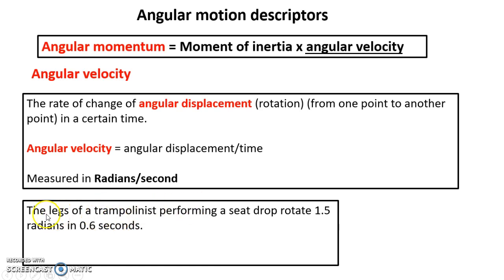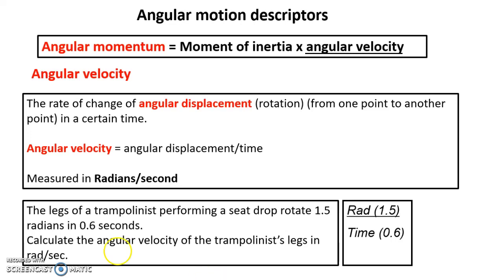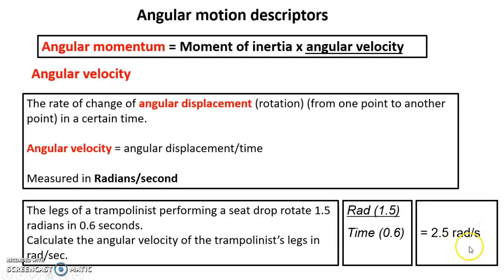So this would be the kind of thing you'd get. You'd be given the radians. For example: the legs of a trampolinist performing a seat drop rotate 1.5 radians in 0.6 seconds. Your simple task would be to calculate the angular velocity of the trampolinist's legs in radians per second. Have a go — pause and use your calculator. You'd use 1.5 divided by 0.6, and you'll get your answer as 2.5 radians per second. Make sure you've got your definition, how you work it out, and the unit of measurement.